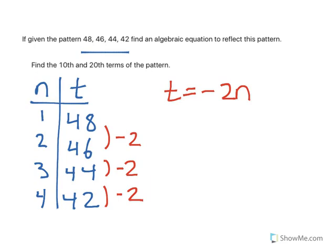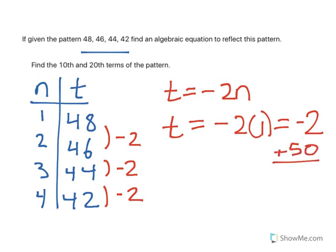I know the tricky thing about these ones is they're descending. So we're actually starting with the value, and then we're going to take away 2 times n each time. So just like before, we want to figure out what we're going to have to start with in order to make this true. So if I were to do it for the first term, I would get t equals minus 2 times 1, which gives me negative 2. So I'd have to add 50 to get to our answer of 48.